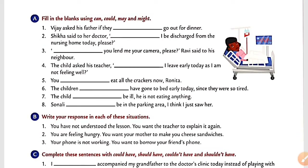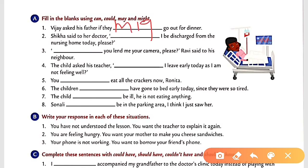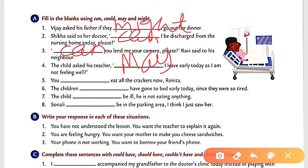Exercise: Fill in the blanks using can, could, may, or might. Number one: Busy asked his father if they might go out for dinner — very polite request, so 'might'. Number two: Sika said to her doctor, 'Can I be discharged from the nursing home today?' — that is 'can'. Number three: 'Can you lend me your camera please?' — informal request, so 'can'. Number four: The child asked the teacher, 'May I leave early today as I am not feeling well?' — formal request, so 'may'.